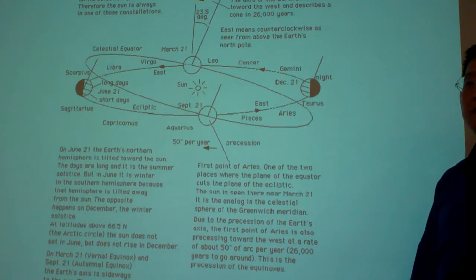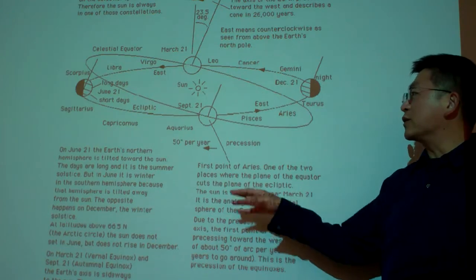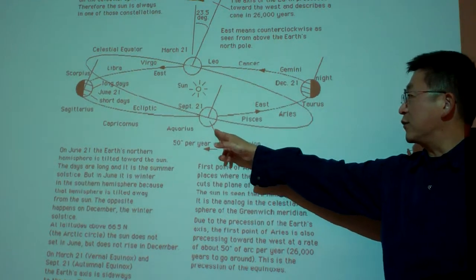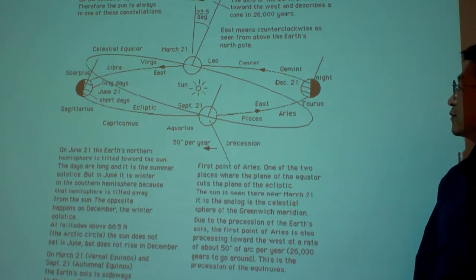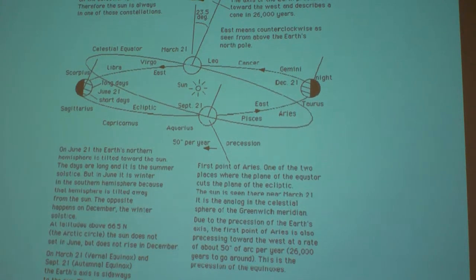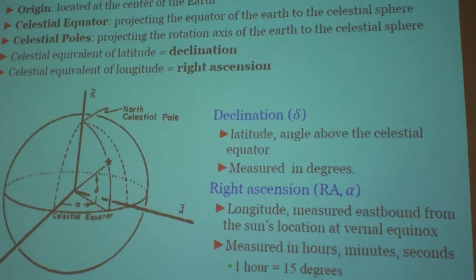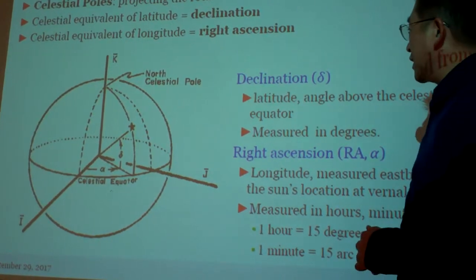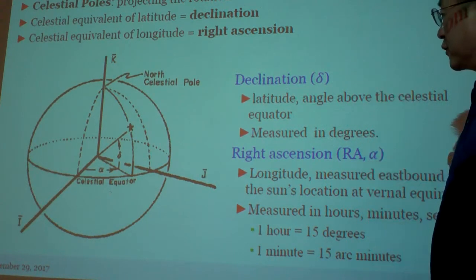We should look up the Almanac — that will give us, for a given year and day, what the direction of this line is, so we have precise information. This is a more clear definition of the spherical celestial coordinate systems.